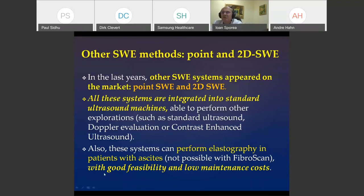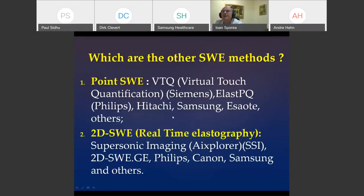Results from the literature show good feasibility and low maintenance cost. For point shear wave elastography, the first on the market was VTQ from Siemens, followed by ElastPQ from Philips, Hitachi, Samsung, Esaote, and others. For 2D, the first was Supersonic Imagine's SuperSonic Explorer, and later GE, Philips, Canon, Samsung, and other systems incorporated this method into high-class machines.